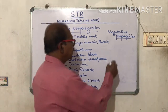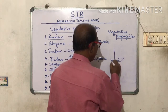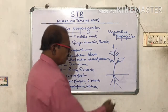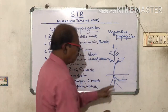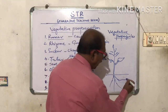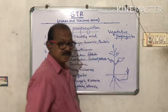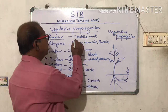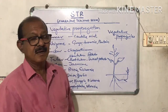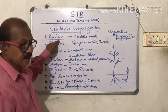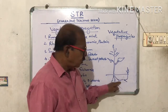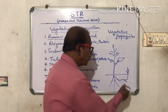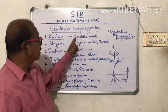What is a Runner? Suppose this is a plant — a small plant — this is the soil level and these are the roots. In some plants the roots grow horizontally below the soil and come up like a small plant. This structure is called a Runner. For example, Centella, Mint, etc. are plants that propagate with the help of a Runner.